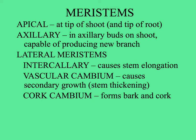Then the lateral meristems are of three kinds: intercalary, which causes stem elongation, and we have this in certain plants; the vascular cambium in dicot plants, which causes secondary growth; and the cork cambium that forms bark and cork in a plant with secondary growth.